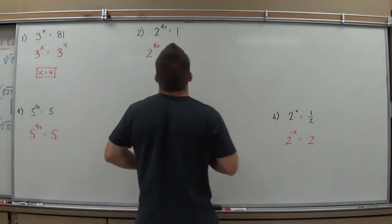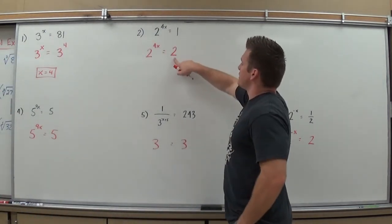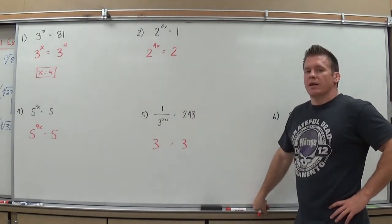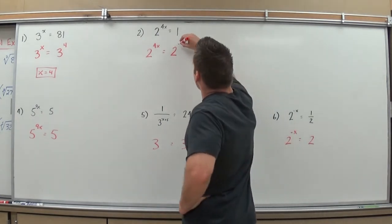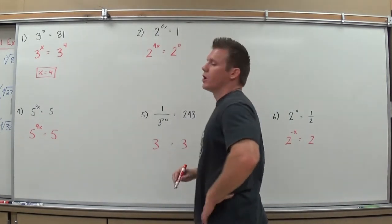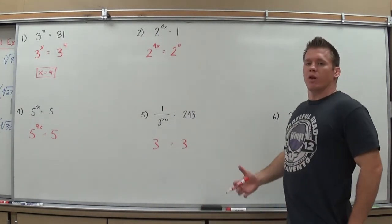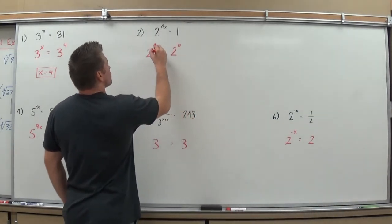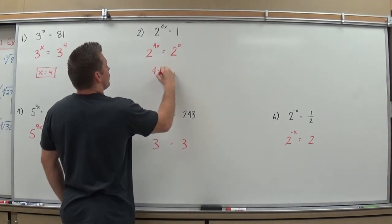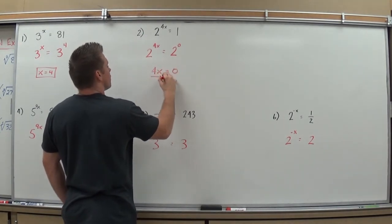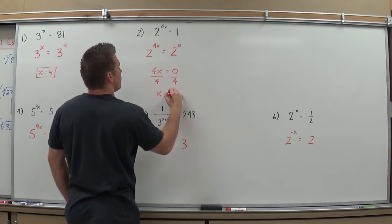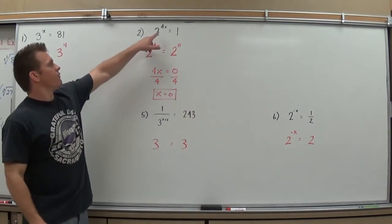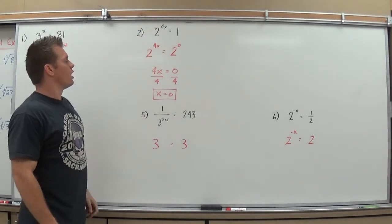Next: 2 to the 4x equals 1. I need to know what I can raise 2 to in order to get 1. Anything to the 0 power equals 1, so 2 to the 0 is equivalent to 1. Now I set the exponents equal: 4x equals 0, divide by 4, and my answer is x equals 0. Checking: 4×0=0, and 2 to the 0 is 1. Correct.